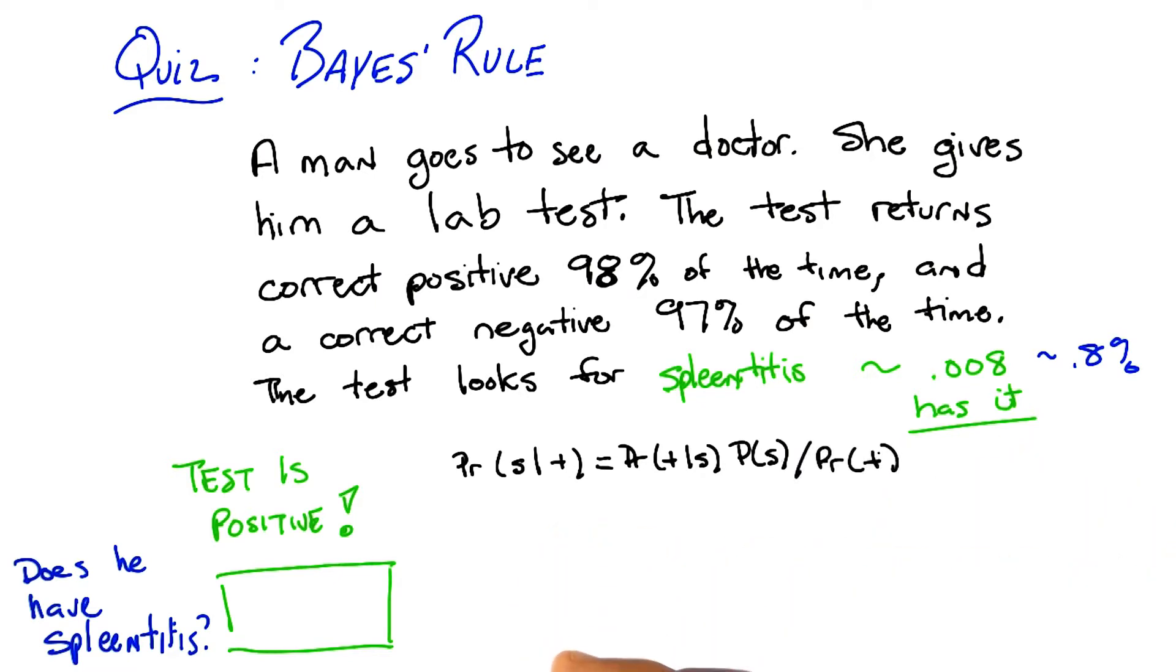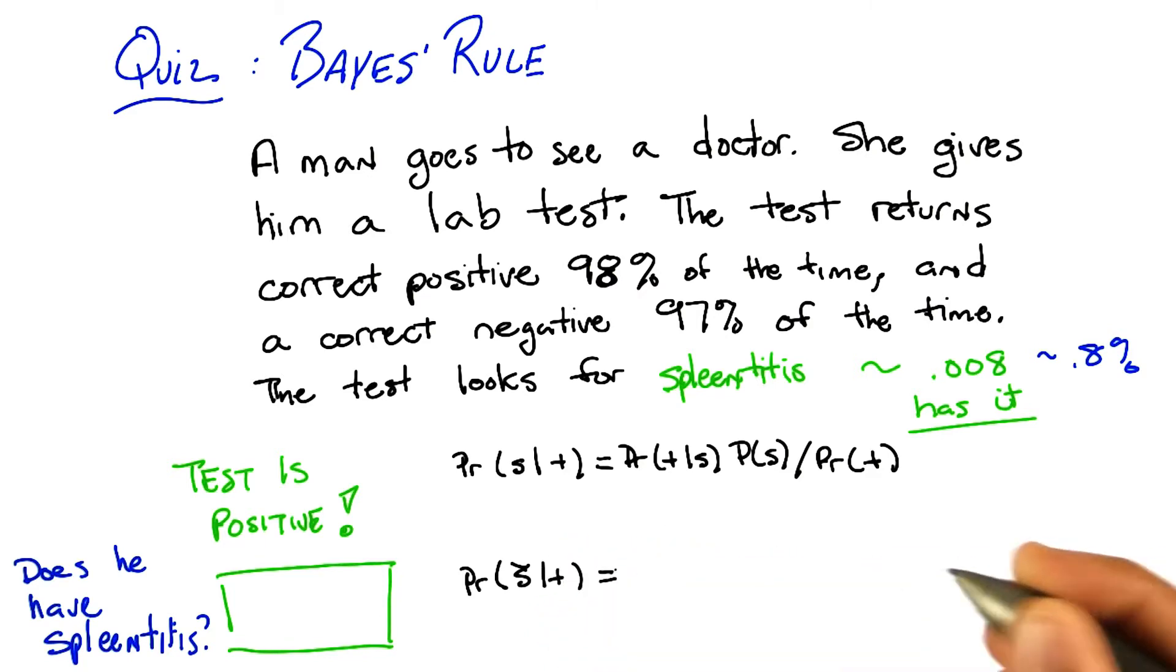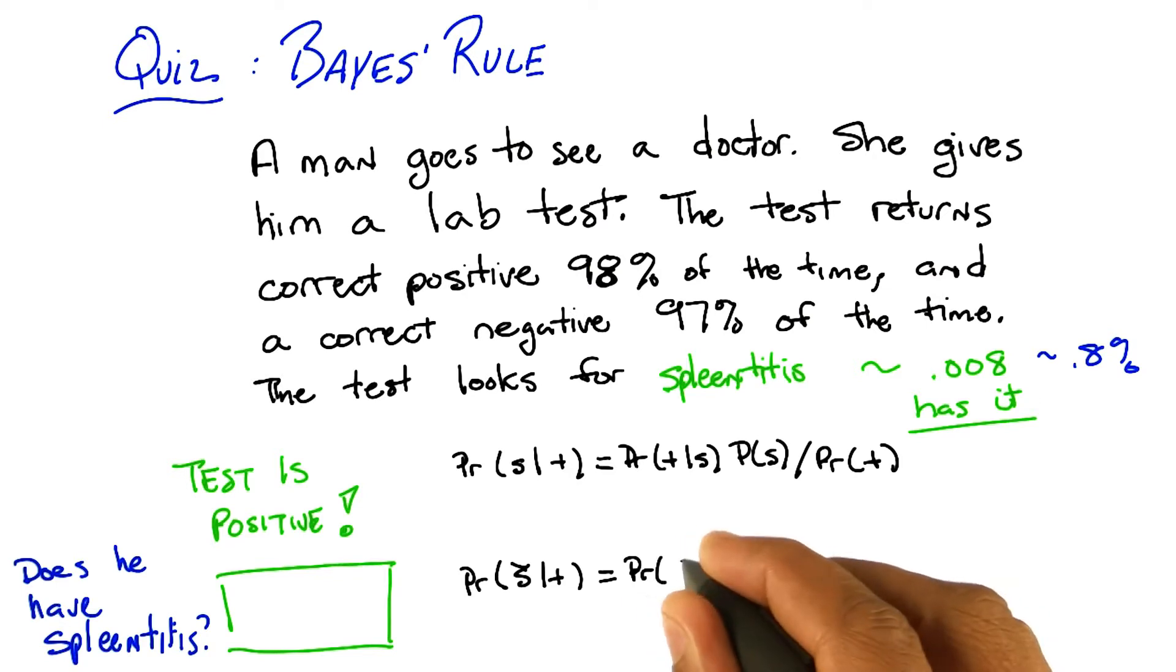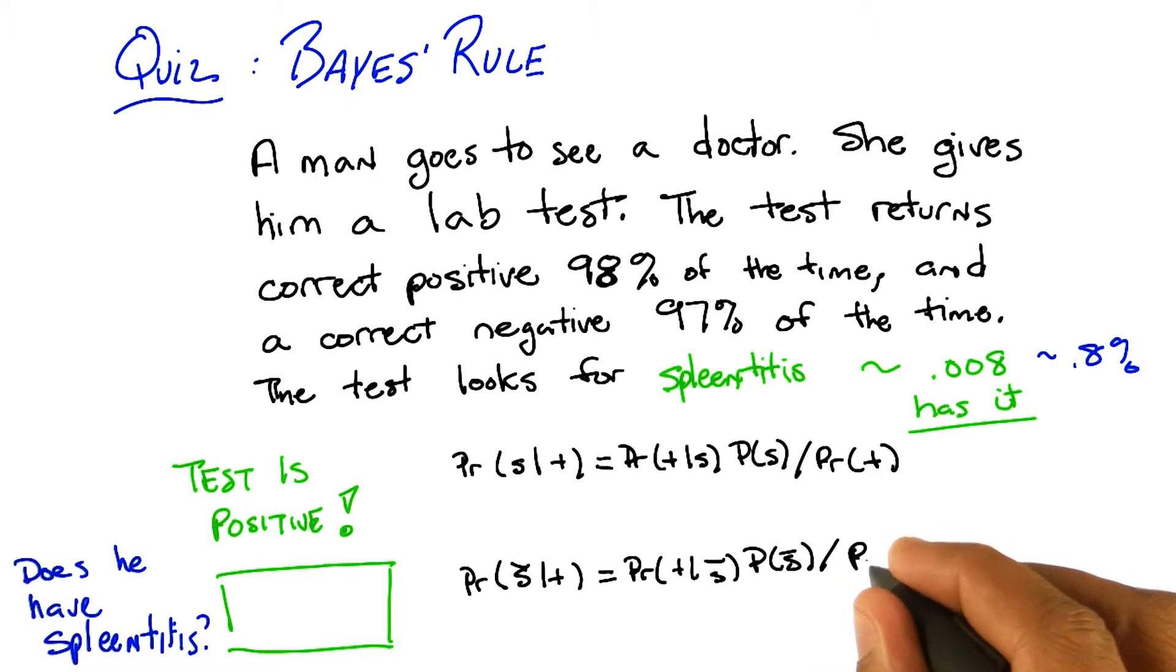So, it's the same as the probability of the positive result, given that you have splenitis, times the probability, the prior probability of having splenitis. Mm-hm. And I want to say normalized, but like divided by the probability of a positive test result. And what would be the probability, the other option is that you don't have splenitis, even though you got a positive result. And that would be equal to? The probability of a positive result, given that you don't have splenitis, times the prior probability of not having splenitis, divided by the, again, the same thing, the probability of the test result. So those two things added together need to be one. Right. But as you point out, if we just want to figure out which one is bigger than the other, we don't actually have to know this. Good point. So we can ignore it.